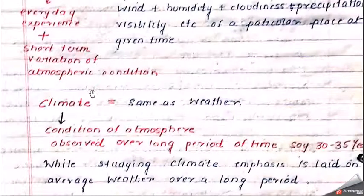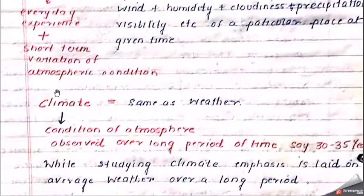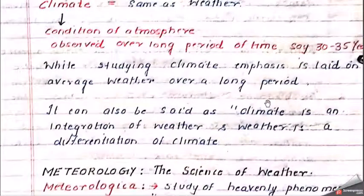Weather is an everyday experience — a sort of variation of atmospheric conditions. On the other side, climate is the same as weather but over a longer period of time, say 30 to 35 years. If we take the average of weather, we come to a conclusion for climate. Climate is a particular type of atmosphere at a particular location which remains constant for hundreds of years. Climate is an integration of weather, and weather is a differentiation of climate.